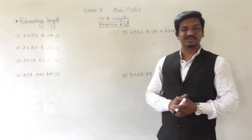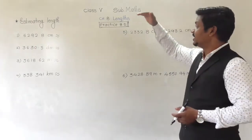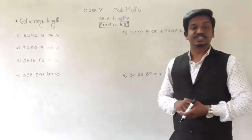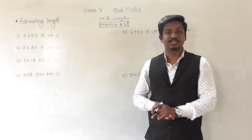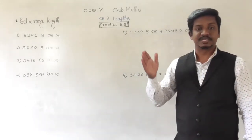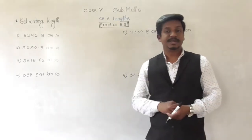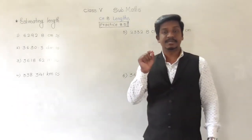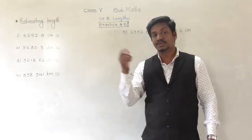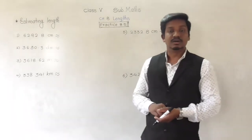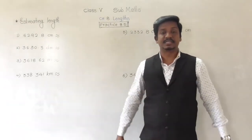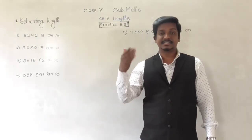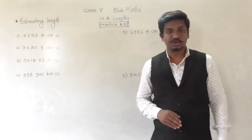Hello, my dear students, welcome to today's video lecture on maths. We are dealing with chapter 8, lengths. Till now in this chapter we have learned the conversion of length from one unit to another unit, as well as the four operations — addition, subtraction, multiplication, and division of length — and word problems based on length. The next concept we are going to learn today is estimating length. In the first chapter when we learned about numbers, we saw estimating numbers, that is rounding of numbers to the nearest places — nearest tens, hundreds, thousands, and so on.